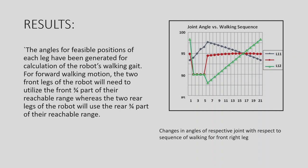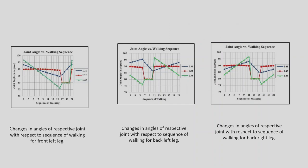The graph shows changes in the angles of respective joints with respect to the sequence of walking. Walking for the front right leg, and these are the other legs from the same graph: changes in the front left leg, back left leg, and back right leg. These are the graphs for each leg.